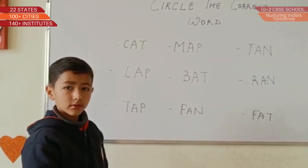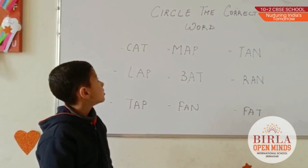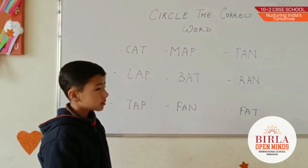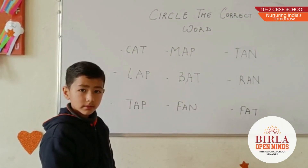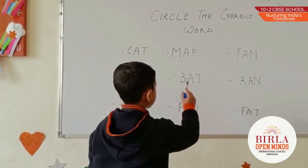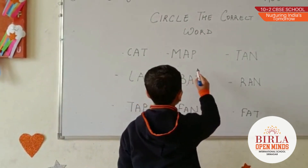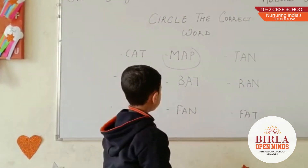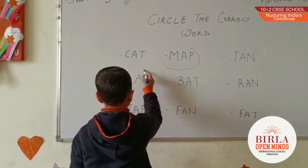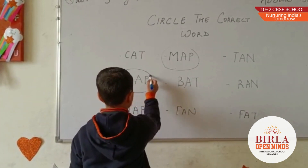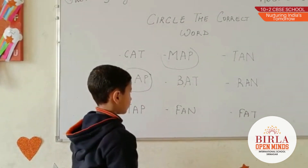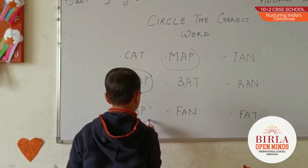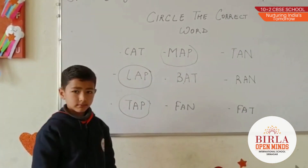Good morning, Rayyan. Good morning. What activity are we doing today? Circle the correct words. Okay. Can you circle AT family words? Yes. And A-T. Very good. Next. And A-T. Very good. Next. T-A-T. Very good. Thank you, Rayyan.